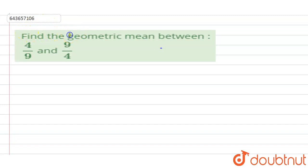the geometric mean between four by nine and nine by four. First of all, we need to know what is the formula of geometric mean.